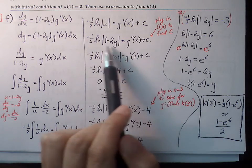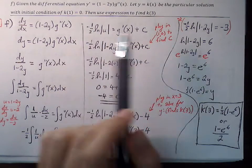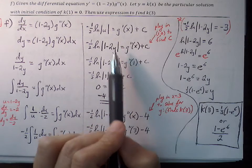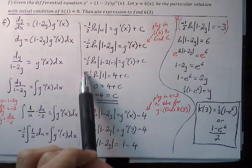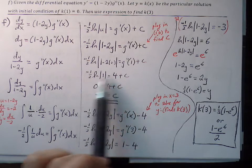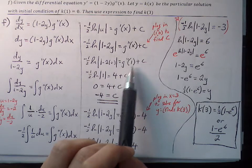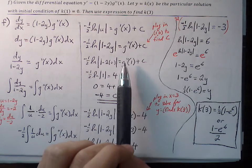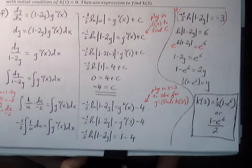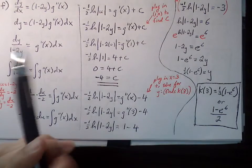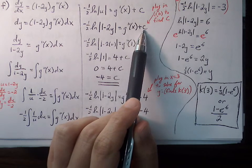Applying the antiderivative rule: natural log of the absolute value of u with coefficient negative one half, and G double prime becomes G prime on the right side plus C. We replace u back in terms of y: negative one half times natural log of the absolute value of one minus two y equals G prime of x plus C. Now we solve for C using the initial condition (1, 0): plugging one for x and zero for y gives natural log of one which is zero. G double prime of one from our table is four, so four plus C equals zero, meaning C equals negative four.